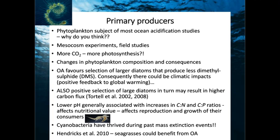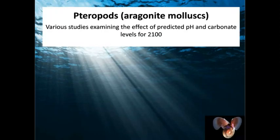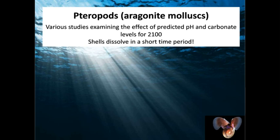Something that probably won't do as well are pteropod mollusks. Mollusks are a key group that calcify — some use calcite, some use aragonite, some use both. Pteropods only use aragonite, which is the most soluble form of calcium carbonate. These pteropods are also called sea butterflies; they're consumed by sea angels, which are also mollusks but lose their shell when they metamorphose. Various studies have shown that pteropod shells dissolve within a short time period under acidified conditions.